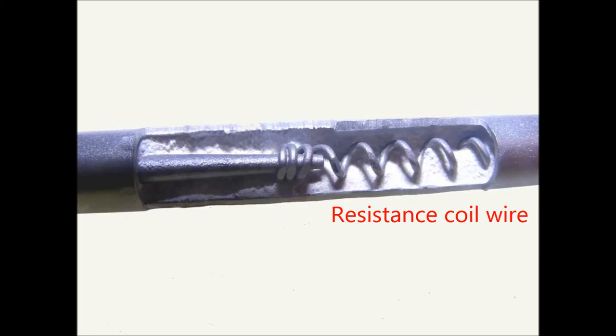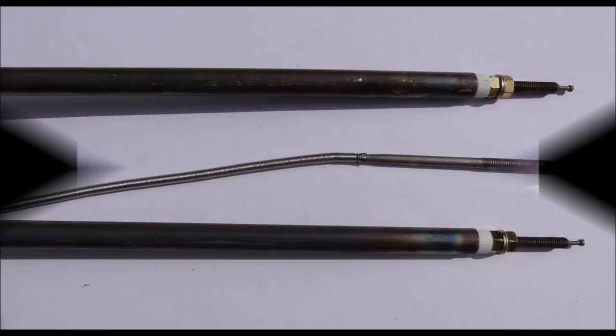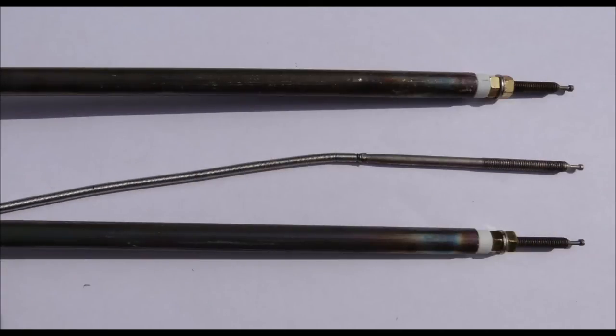Each end of the resistance coil wire is attached to a terminal pin. Each end of the element is sealed with a white ceramic end cap through which runs the terminal pin, seen again here in the middle.